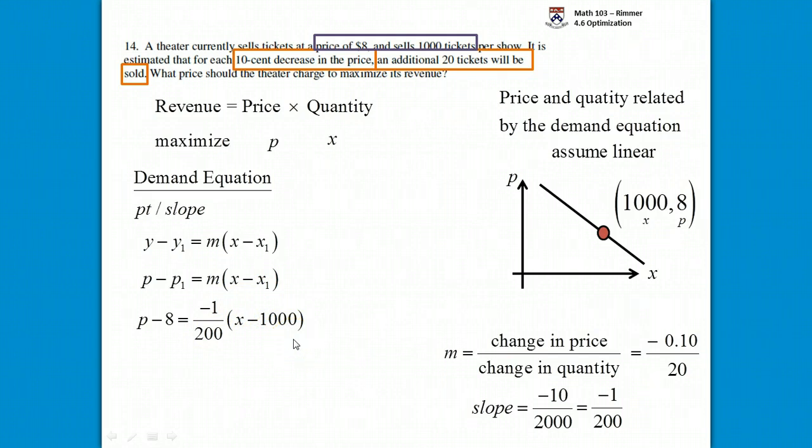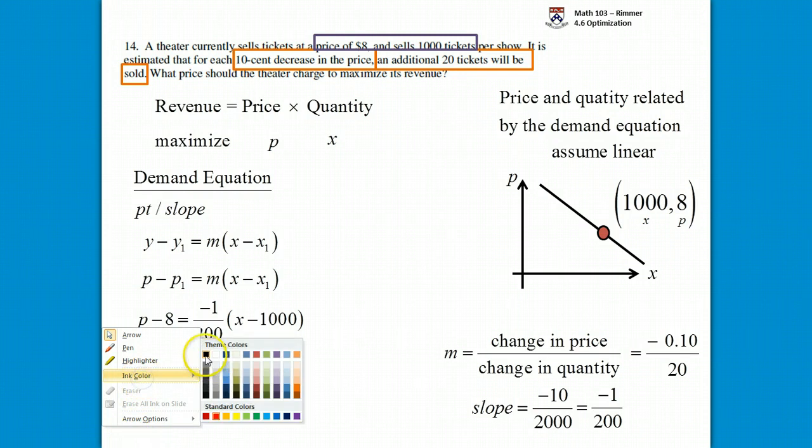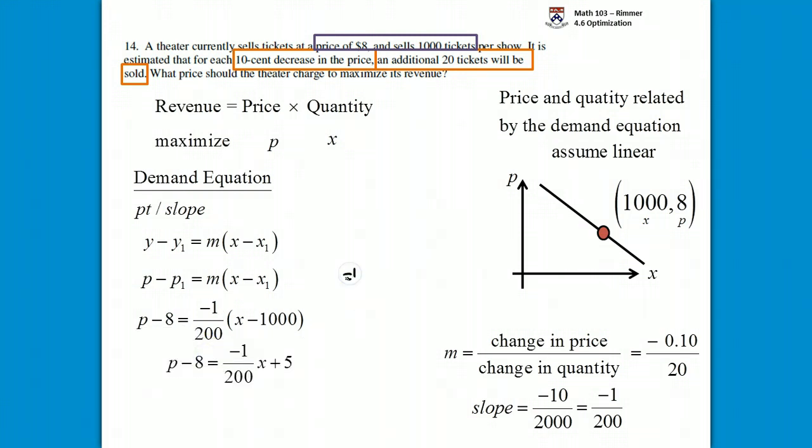We'll just distribute across. We have negative 1 over 200 times x. We'll have to multiply negative 1 over 200 times 1,000. If we take negative 1 over 200 times it by 1,000, we can cancel out the two zeroes. Then we basically have 10 over 2, which is 5. The 1,000 was negative as well, and so the negative here and the negative here gives us a plus 5. We just need to take this 8 and ship it over by adding it.